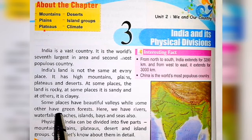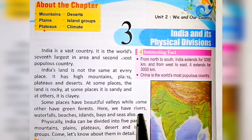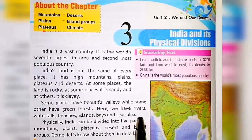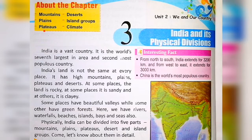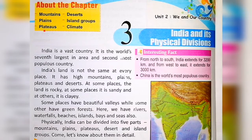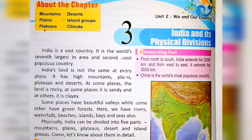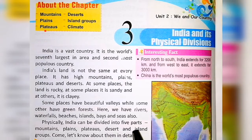Some places have beautiful valleys, while some other places have green forests. Here we have rivers, waterfalls, beaches, islands, bays, and seas. Waterfalls come down from above; beaches are the shores of the sea; islands are inside the sea; bays are deep inlets; and seas as well.